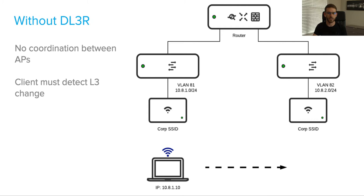So first, why do we need layer-3 roaming? Roaming was basically developed to move a layer-2 client from one access point or one BSSID to another. Within a layer-2 domain, if clients are moving from one to the other, it's fairly seamless. That handoff happens pretty quickly and traffic continues to pass without the client or the user noticing that they have moved from one access point to another.